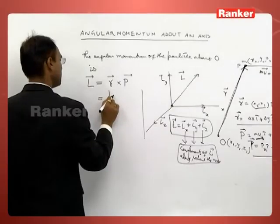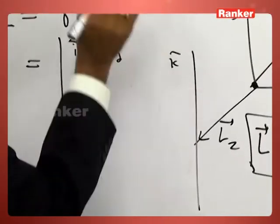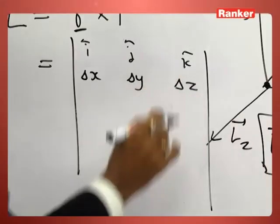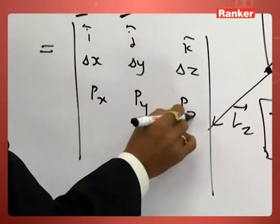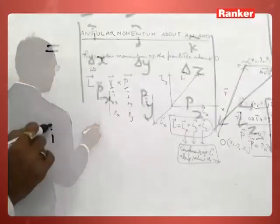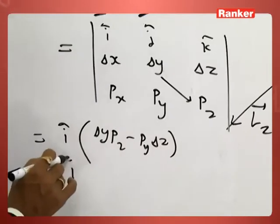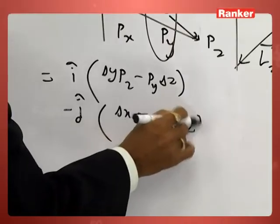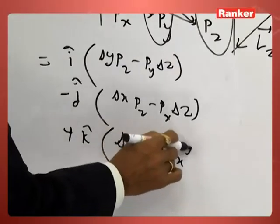In determinant form, L = R × P is expressed with î, ĵ, k̂ in the first row; Δx, Δy, Δz in the second row; and Px, Py, Pz in the third row. Expanding the determinant gives: î(Δy·Pz − Py·Δz) − ĵ(Δx·Pz − Px·Δz) + k̂(Δx·Py − Px·Δy).